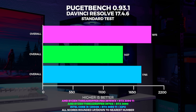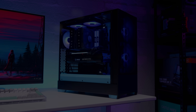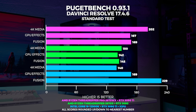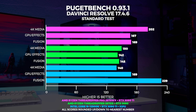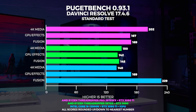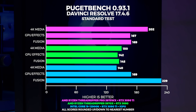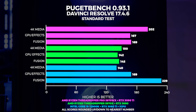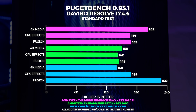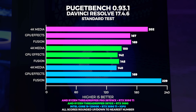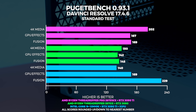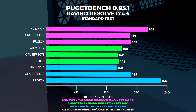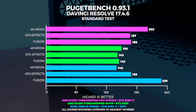This result does surprise me quite a bit, however if we take a look at the breakdown on the next graph — the 4K media score of the Threadripper Pro is far higher than both other systems, however the Fusion score is miles ahead of both AMD systems. This is because much like After Effects, Fusion is also compositing software that benefits from having multiple GPUs and a higher core clock.